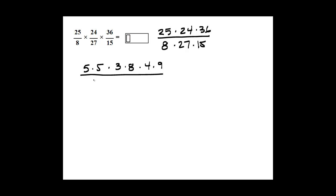In our denominator, we have 8, which is just 8. And look, we have this 8 here. We have 27, which is 3 times 9, and we have 15, which is 3 times 5.